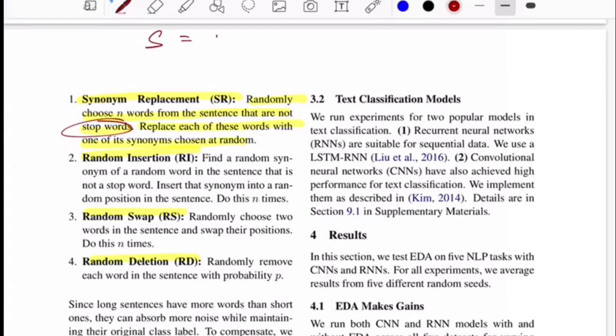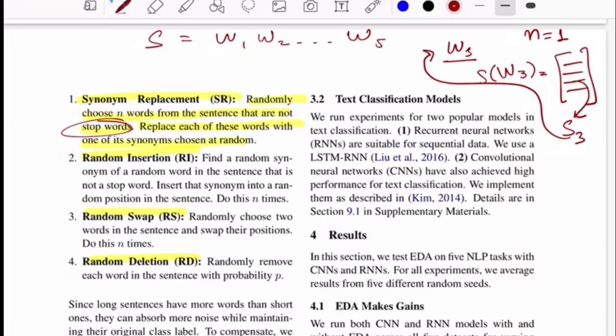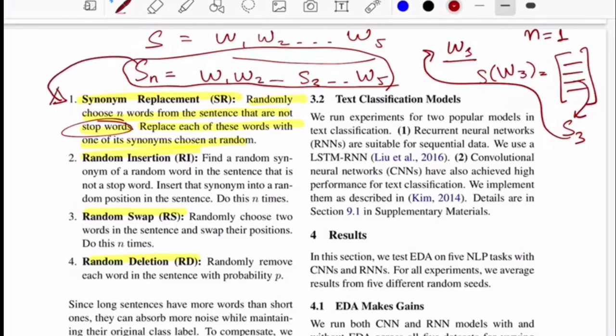Let's take an example. If you have a set S that has five words w1, w2 till w5, we choose n words at random. Let's say our n equals 1, so we choose one word at random and we get w3. We replace this word with one of its synonyms that was also chosen at random. We have a list of synonym words for w3. Now you choose a random word from this, let's say it becomes s3, and you replace w3 with s3 for this sentence. So the new S becomes w1, w2, s3, w4, w5. This is a new augmented sentence.